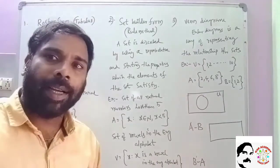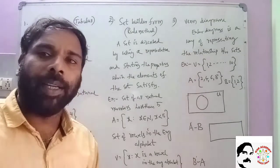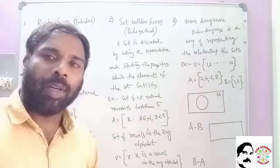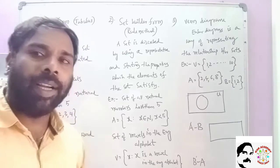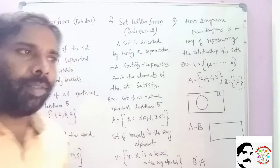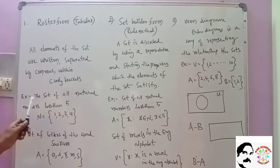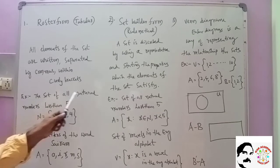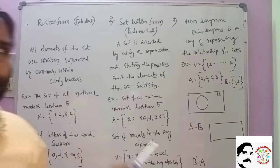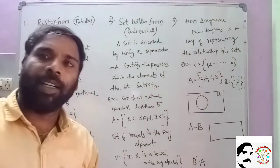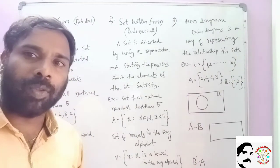For example, the word India — I, N, D, I, A. If you look at the letters, these are called the alphabet of the set. Here, the set of all natural numbers less than 5 can be expressed in this way.